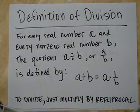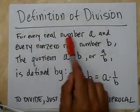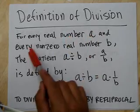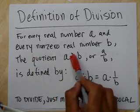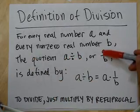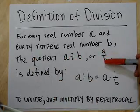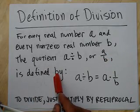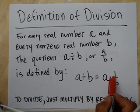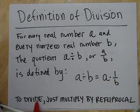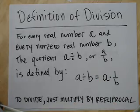Definition of division. For those of you who didn't know what division is, we're going to help you out here. And I want you to think about it algebraically. It says for every real number A and every non-zero real number B, the quotient A divided by B, which is sometimes written like this, is defined by A divided by B is A times one over B. So to divide, you just multiply by the reciprocal.